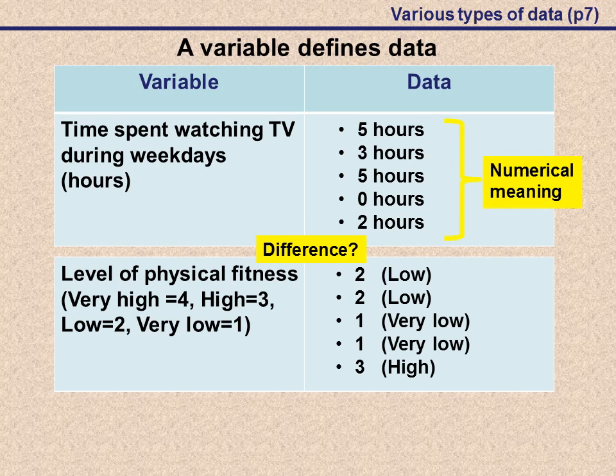On the second example, we also have numbers, but these numbers are actually just symbols that represent low, very low, high and very high. If we do calculations, tempting as though it may be, we're not really finding anything that means something. If we had an average of 2.04, it doesn't actually mean anything. These numbers only represent concepts. There's no numerical meaning in this case.